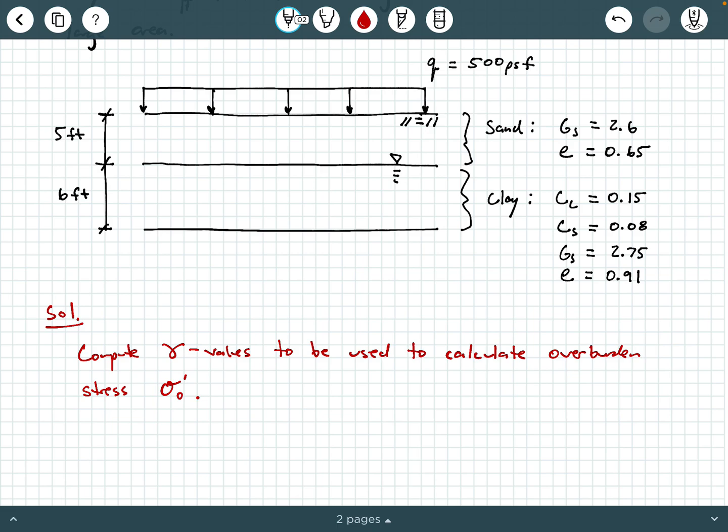We're going to need those in order to calculate the overburden pressure. So I'm going to say, first, compute gamma values to be used to calculate overburden stress sigma prime naught. So let's go ahead and first calculate the dry unit weight of the sand. We're going to calculate the dry unit weight of this sand because the water table is below that. The sand is considered dry since the water table is not within the sand. And we remember from one of our phase relationships, we can calculate dry unit weight as specific gravity times the unit weight of water divided by 1 plus the void ratio. And so for that sand, that's going to be 2.6 times 62.4 PCF divided by 1 plus 1.65. So when you crunch this through, you should get 98.3 PCF.